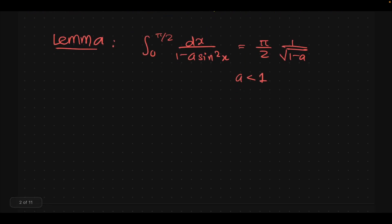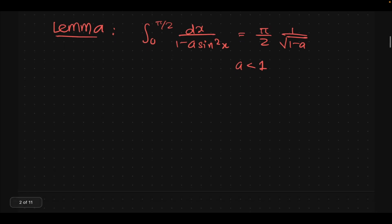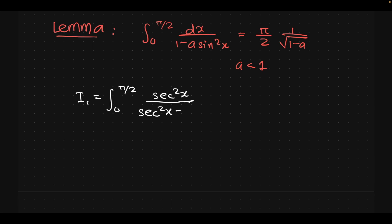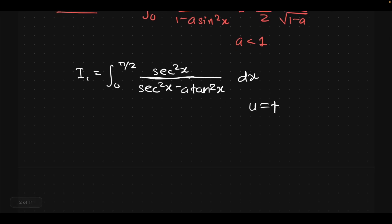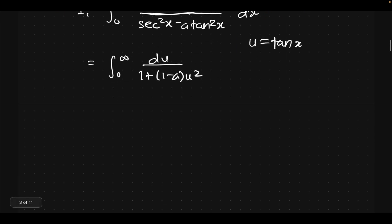How will we prove this? Call this I₁. We can divide numerator and denominator by cos²x so that we have sec²x over (sec²x minus a·tan²x) dx. Now the simple substitution u = tan x gives us the integral from 0 to infinity.